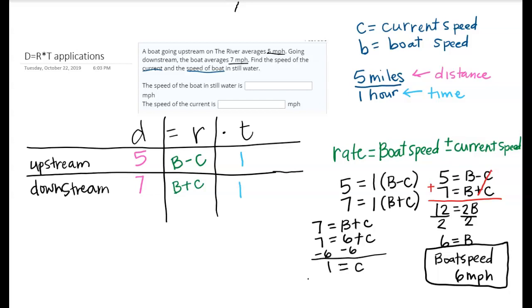This is really saying that the speed of my current is 1 mile per hour. And there we go. Now we're able to tell the two things that it was asking us to find: the speed of the current and the speed of the boat.